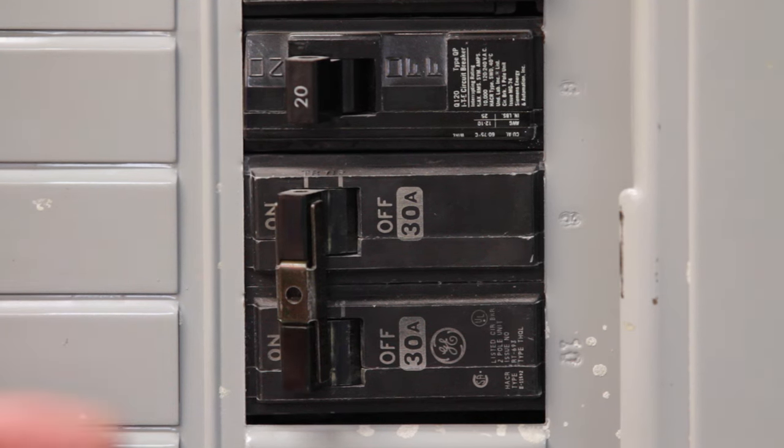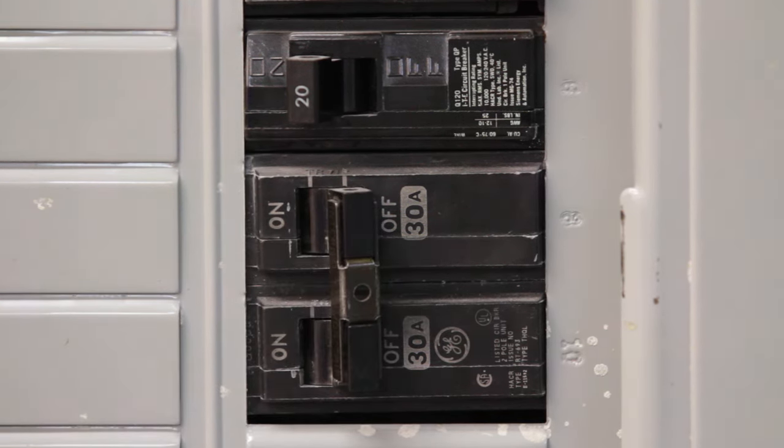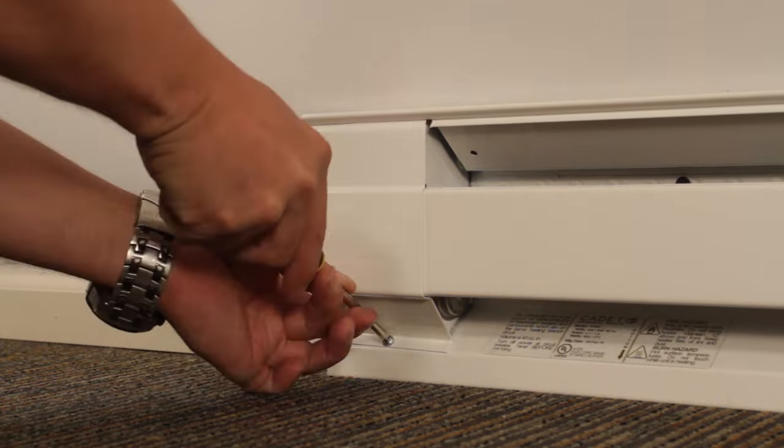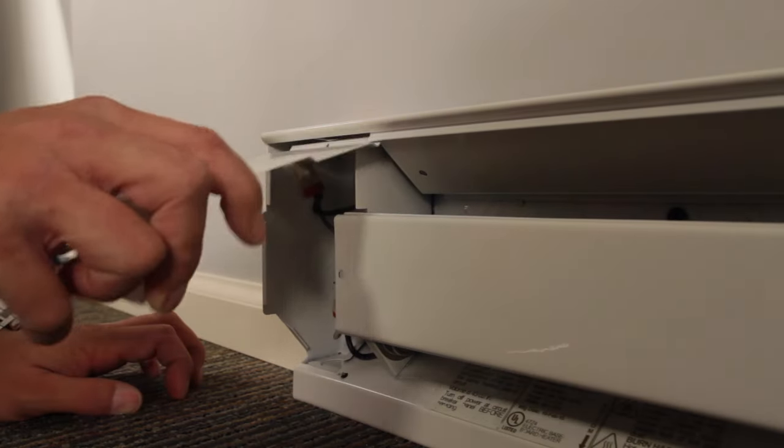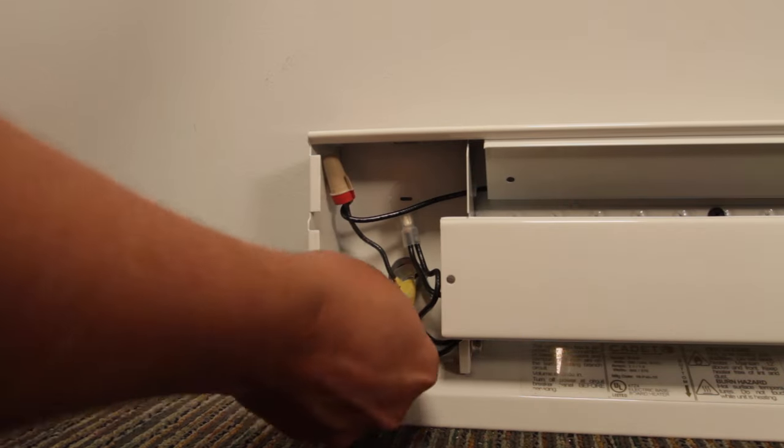Before you do anything else, you'll want to turn off the breaker. First unscrew the screw that holds the wiring compartment cover on and remove the cover. Disconnect the power wires that go to the heater.